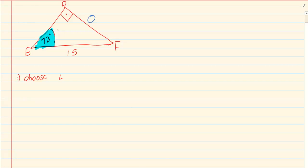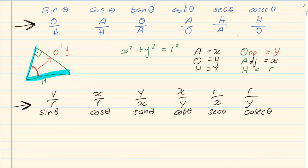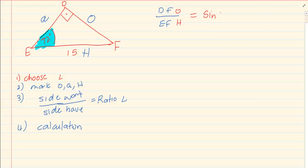Now I am going to mark my O, my A and my H. O opposite, H is the hypotenuse and A is the remaining side or the adjacent side. Then I am going to say side I want over side I have. I am going to equal to a ratio and an angle. And then it is calculation. So let's say I want DF. So DF is the side I want over EF is the side I have. DF is O. EF is H. Now O over H, you must know your trig ratios. So O over H is sin. Which angle did I work with? 72 degrees.